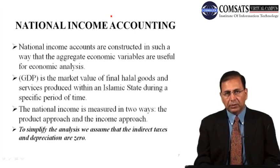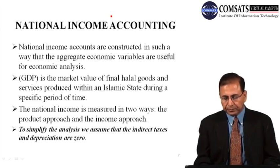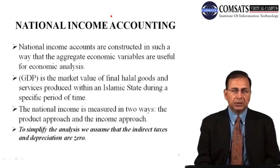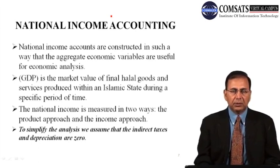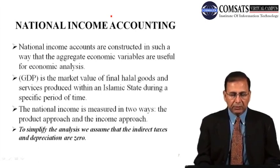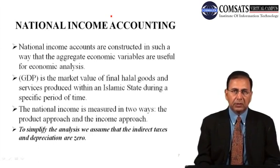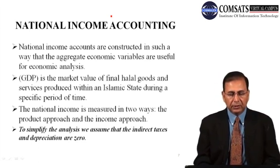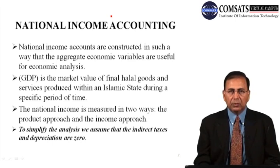In the conventional system, there are four factors: land, labor, capital, and entrepreneur. Capital receives interest, land receives rent, labor receives wages, and the entrepreneur receives profit. In conventional system, capital and management are two different factors. But in Islamic framework, we will discuss what the income sources are and how the equation is built. In developing the Islamic framework, we will assume no indirect taxes and no depreciation.